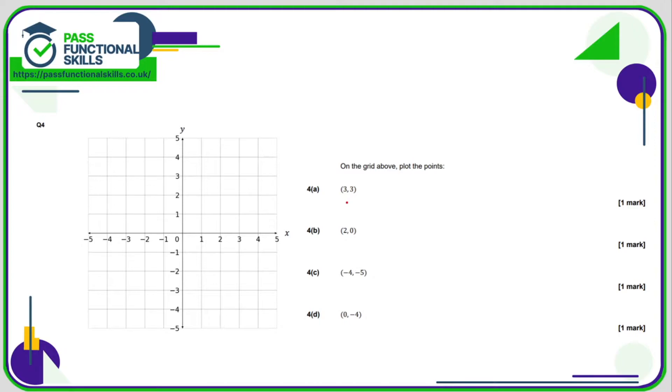More of the same, so plotting three, three: go across to three and up to three is there. Two, zero: go across to two and don't go up at all, so that is B, so I should label these. Minus four, minus five: go across to minus four and then down to minus five, that is going to be there. Zero, negative four: we don't go across at all and we go down to minus four, so this is point D.